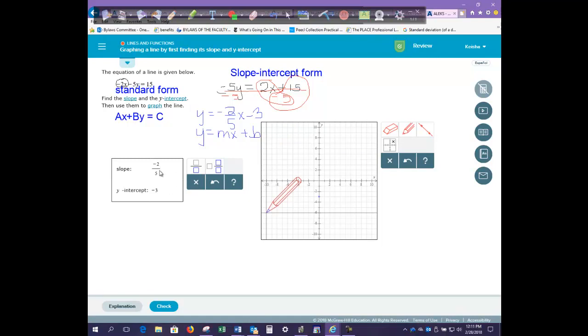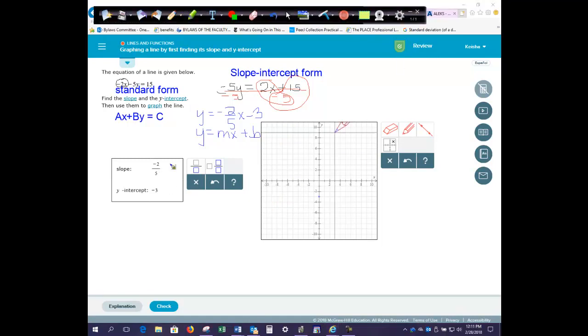Our slope is negative 2 over 5. So with our slope, we're going to use the technique of saying rise over run. So your rise, to simplify it, we're only going to pick two directions, either up or down. And your run, to simplify, we're only going to the right.